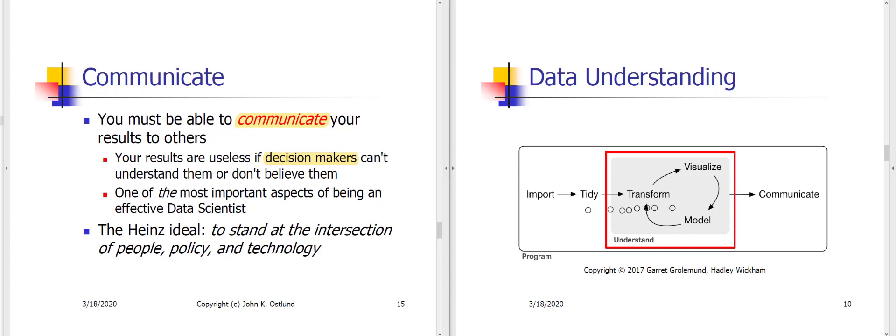Now, to me, it's sort of fascinating that this methodology, if you will, for doing data science is very similar to what the Heinz College ideal or motto is, that is to stand at the intersection of people, policy, and technology. What we're doing here for sure is applying technology in the form of data analysis and statistics in order to generate useful information for people who can then make decisions about how to improve what's going on within their organization or within society as a whole.